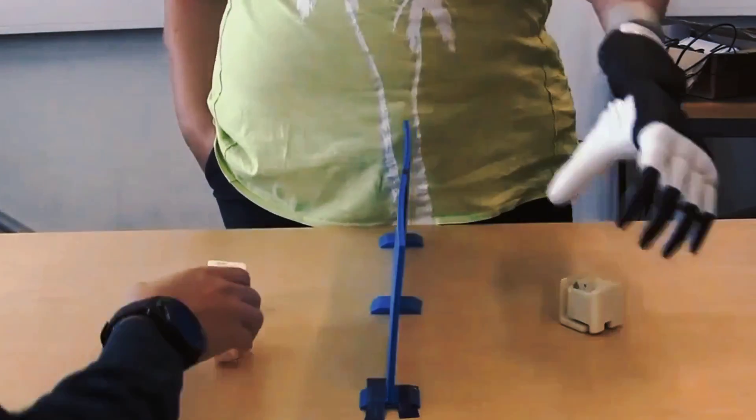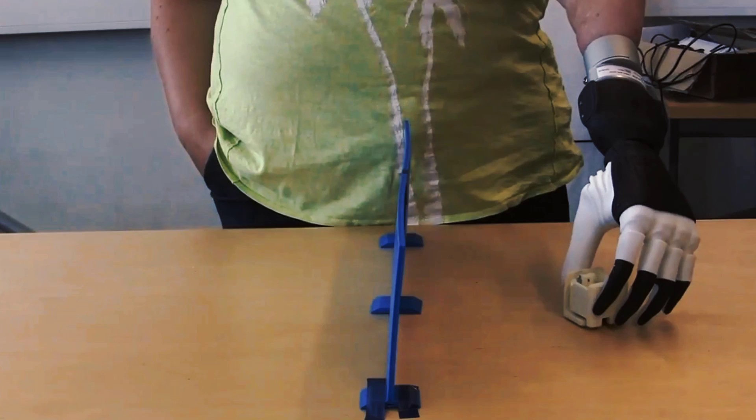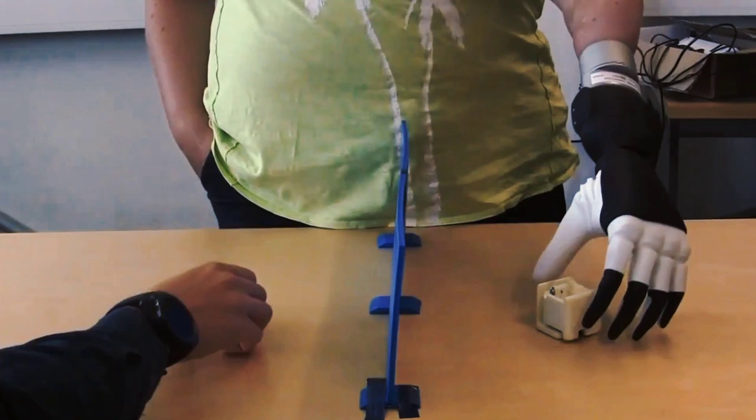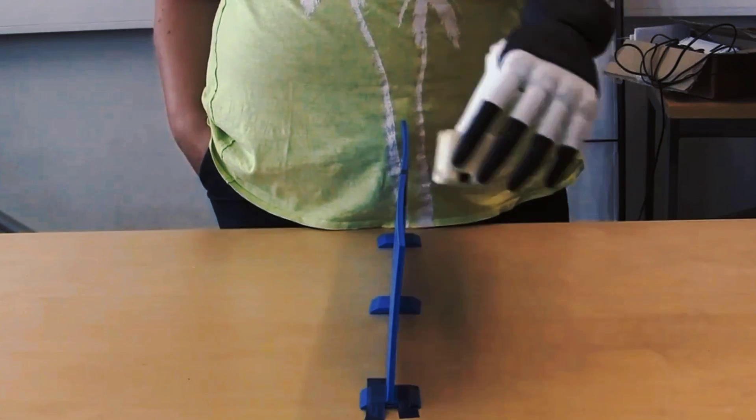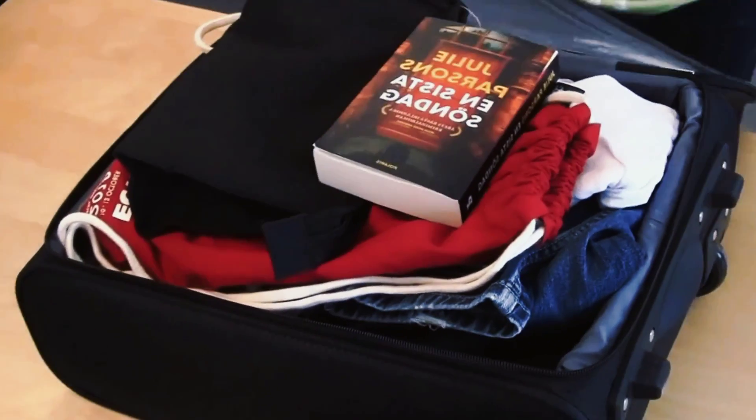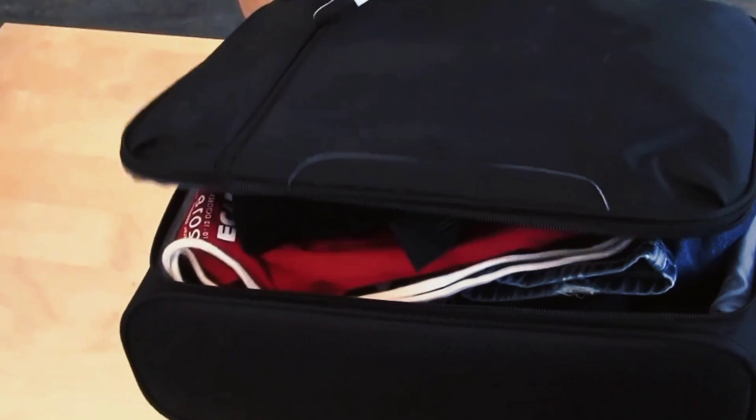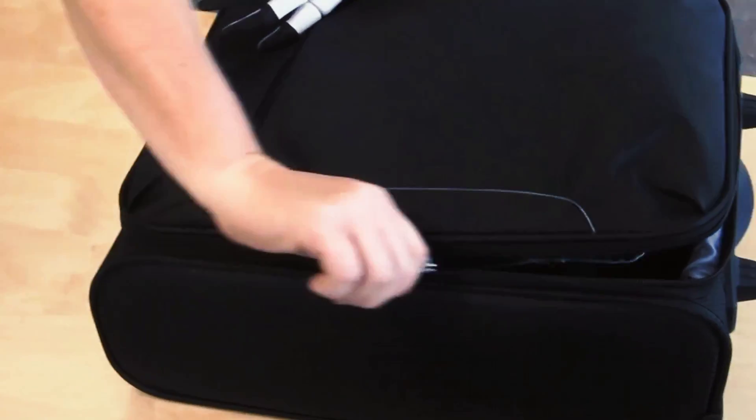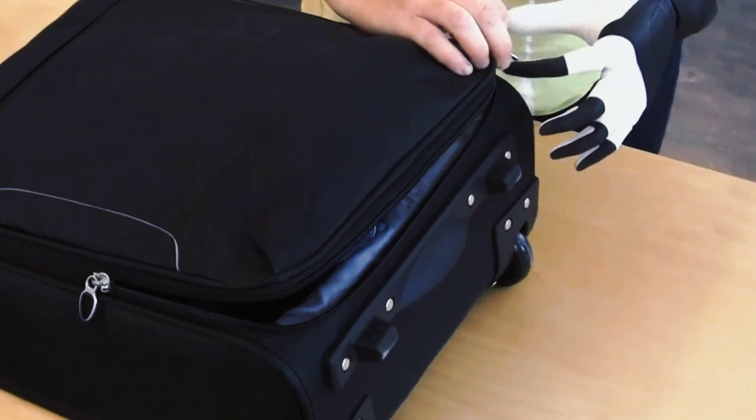Karen underwent these procedures in 2019 and received a new bionic hand called Mia Hand, developed by Prinsilia, an Italian company that manufactures robotic limbs. The Mia Hand has 16 sensors that can detect pressure, temperature, and vibration, and transmit them back to Karen's brain through the electrodes.